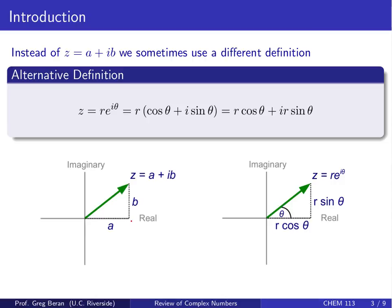So z is some vector in that plane where we have our a, or real component, along x and b, the imaginary component, along y. Comparing these two forms, r cosine theta corresponds to the x part, or a, and r sine theta gives us the b part, or the imaginary component, of the complex number. So both forms — z equals a plus ib and z equals r times e to the i theta — are equivalent. They're just different ways of representing the same complex number.